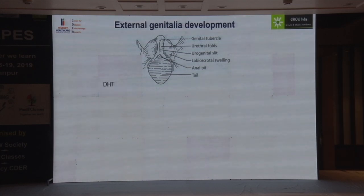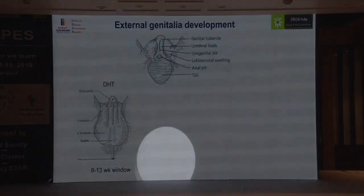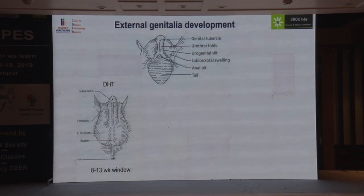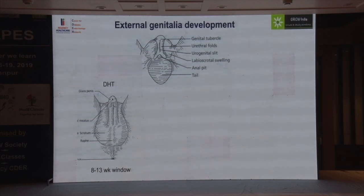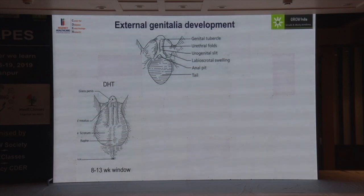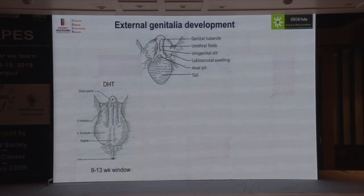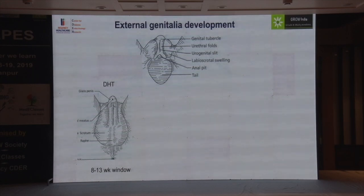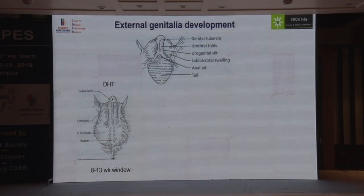External genitalia development occurs mainly because of DHT in boys, with a critical window of 8 to 13 weeks. Testosterone deficiency before 13 weeks results in small phallic size and penoscrotal hypospadias; deficiency after that results only in micropenis. An important example: in Kallmann syndrome, testosterone is high in the first 12 weeks because HCG acts on the testis — but after 12 weeks HCG is gone, so you present with micropenis and not DSD. Therefore, hypogonadotropic hypogonadism should never be suspected if someone has hypospadias.